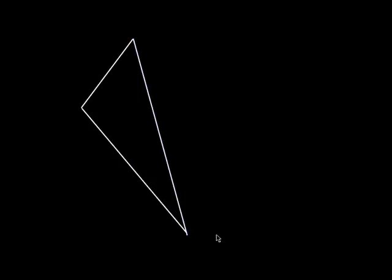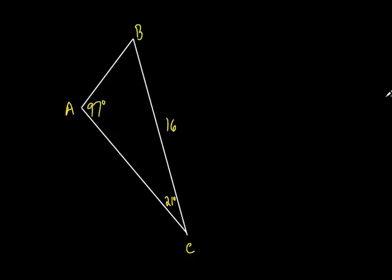Let's take an example straight from the book. I'll make a triangle and put some values in. They name the angles and give one length. They call this angle down here 21 degrees and this one over here 97 degrees. They've given you two angles and one side, where the side is not the included angle — angle-angle-side. That's a hint to use the law of sines.